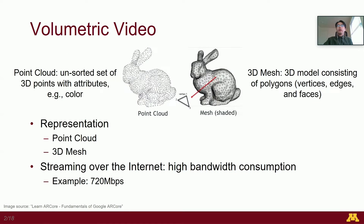Every frame in a volumetric video consists of a 3D scene and can be represented by either point cloud or 3D mesh. A point cloud is simply an unsorted set of 3D points with attributes such as color. A 3D mesh has not only points but also edges and faces. In our work, we focus on point cloud based volumetric videos because of its simplicity and flexibility.